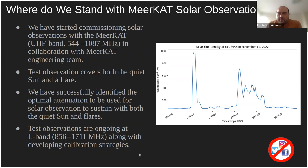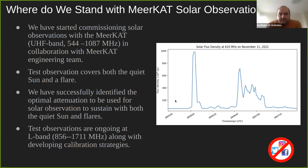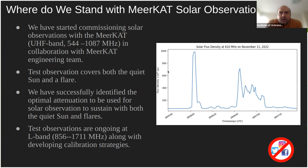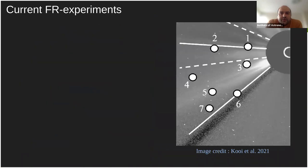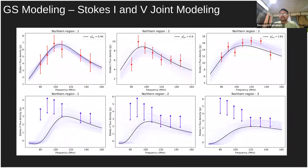Thank you very much, Devujyoti. This was a very interesting presentation. Are there any questions? I can start with a couple: for the gyrosynchrotron spectral fitting, how many runs of the GS code did you do to get these distributions? We used about 10,000 MCMC runs with 100 walkers, so about 10 million GS code runs. The light-shaded purple lines in the spectra represent samples from the MCMC runs, showing the distribution, while the black line is the spectrum for the median of each parameter's distribution.